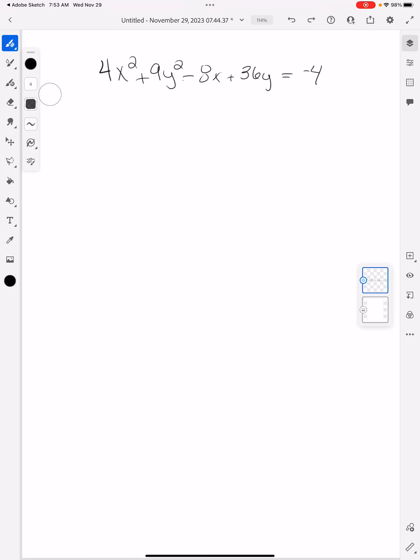So in this equation, it's not in standard form, but I can already see that I have numbers in front of the x squared and the y squared terms, which tells me if I graph this, it's going to be either an ellipse or a hyperbola. So what we want to do is we want to group our numbers together.